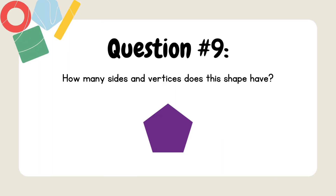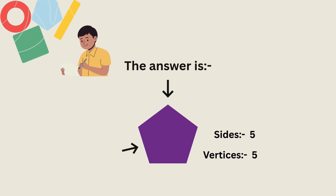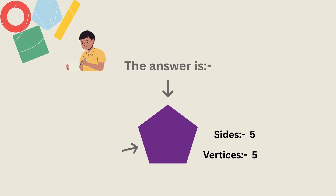How many sides and vertices does this shape have? The answer is sides equal to 5 and vertices equal to 5.